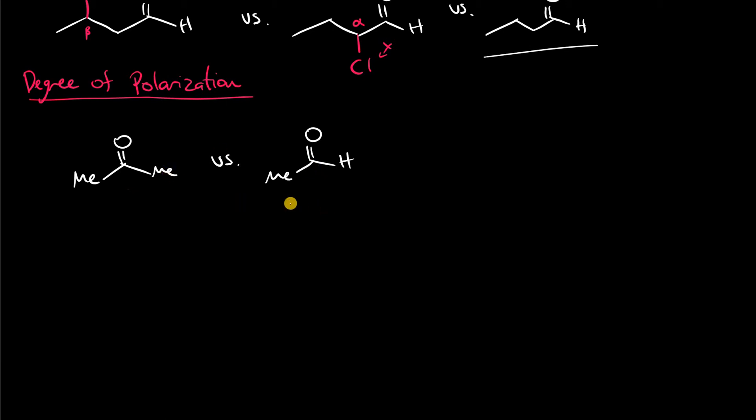A more extreme example would be acetophenone versus benzaldehyde. So here, acetophenone is a benzene directly bound to an acetyl group like this. So we have a methyl on one side and a benzene on the other. Benzaldehyde, however, lacks a methyl group. So again, the presence of this methyl or hydrogen influences the reactivity tremendously. Benzaldehyde is actually quite reactive. Acetophenone, not as much.